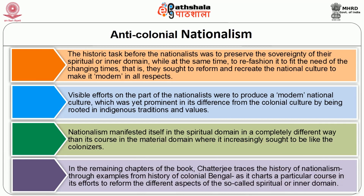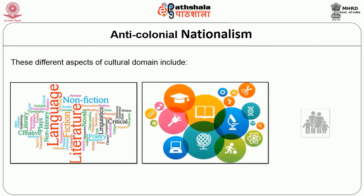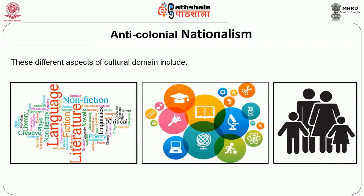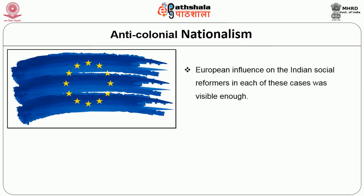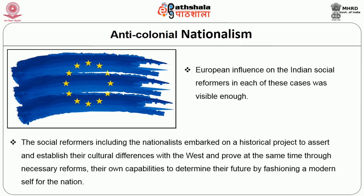In the remaining parts of the book, Chatterjee traces the history of nationalism through examples from the history of colonial Bengal, as it charts a particular course in its efforts to reform the different aspects of the spiritual or inner domain. These different aspects of the cultural domain include language and literature, education, and family, which the nationalists sought to modify to make them in tune with the requirements of the modern world. European influence on the Indian social reformers in each of these cases was visible enough. However, the social reformers and nationalists embarked on a historical project to assert cultural differences with the West, and prove their own capabilities to determine the future by fashioning a modern self for the nation.